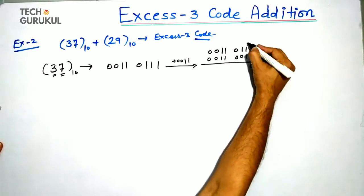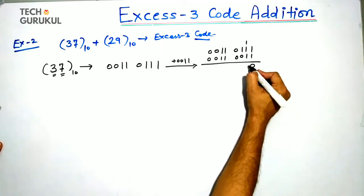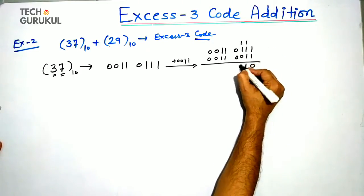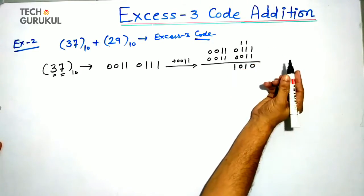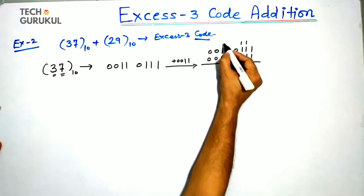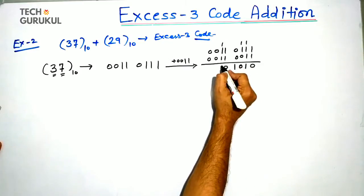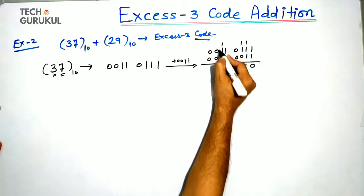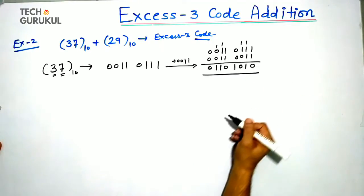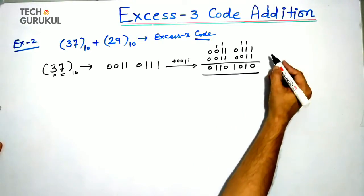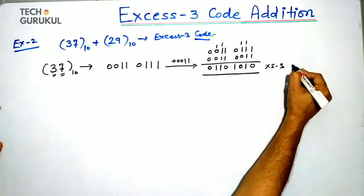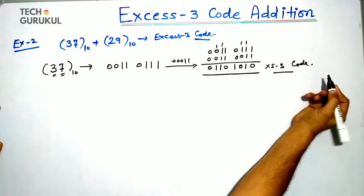Continuing the XS3 conversion for 37, working through the binary addition of each digit group, we arrive at the final XS3 code for 37.